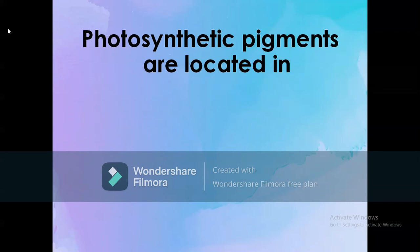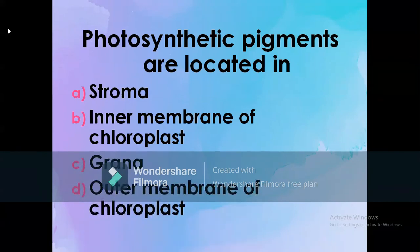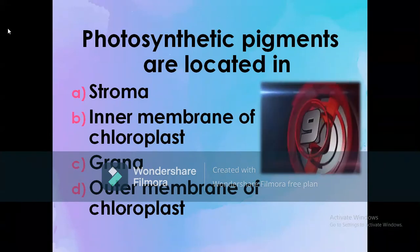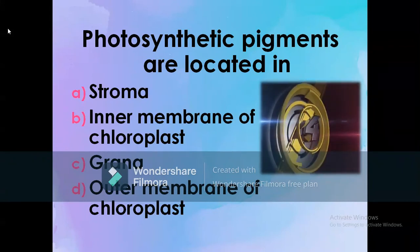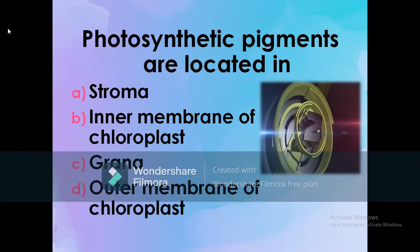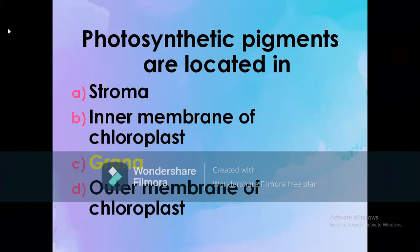Photosynthetic pigments are located in: A) Stroma, B) Inner membrane of chloroplast, C) Grana, D) Outer membrane of chloroplast. The correct option is C: Grana. Photosynthetic pigments are located in the grana.